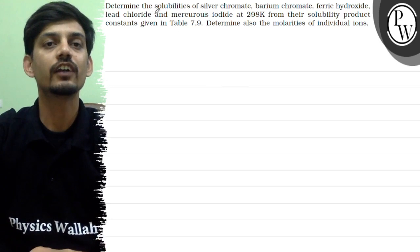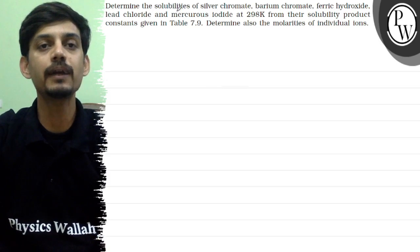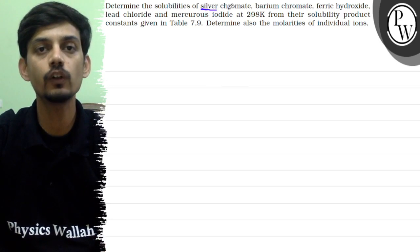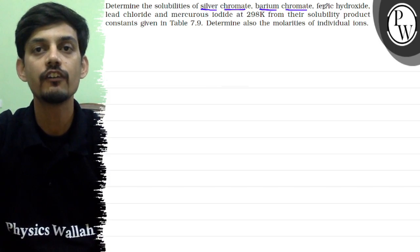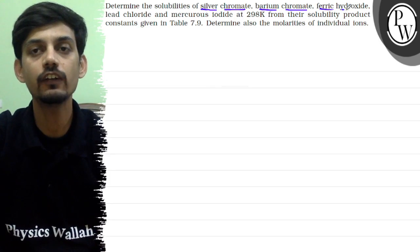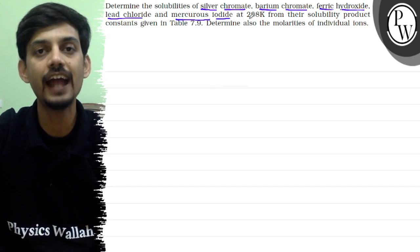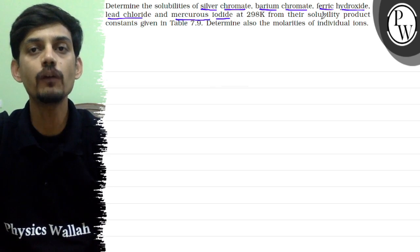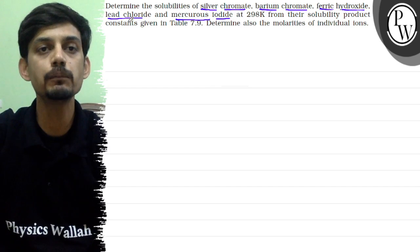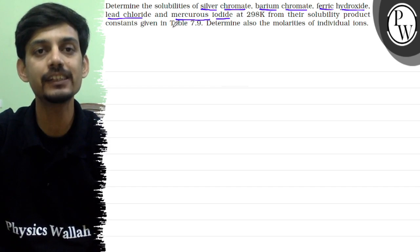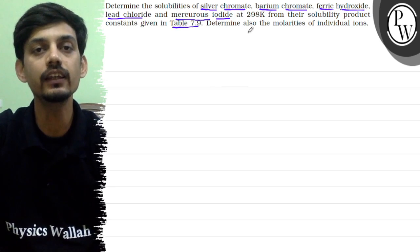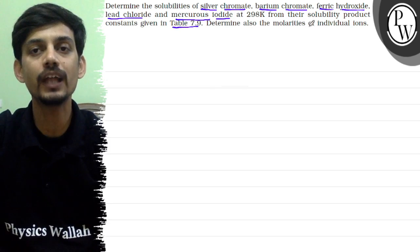The question asks us to determine the solubilities of silver chromate, barium chromate, ferric hydroxide, lead chloride, and mercurous iodide at 298 Kelvin from their solubility product constants given in table 7.9. We also need to determine the molarity of individual ions.